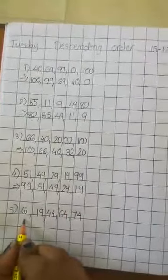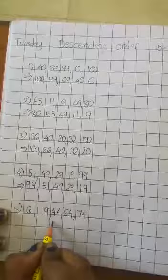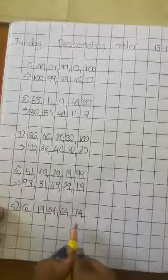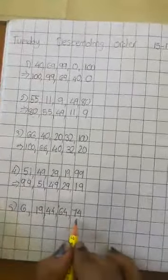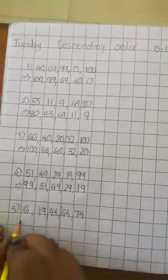Now, last. 6, 19, 44, 64 and 74. Which number is bigger? 74. Write for 74.